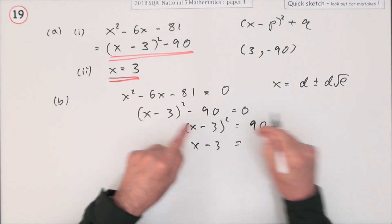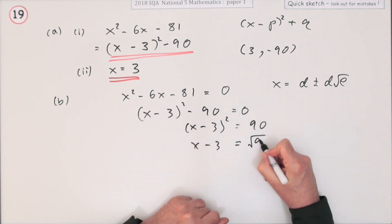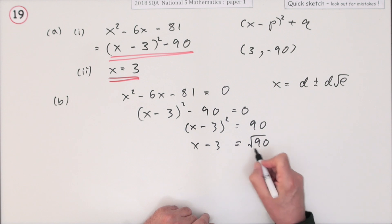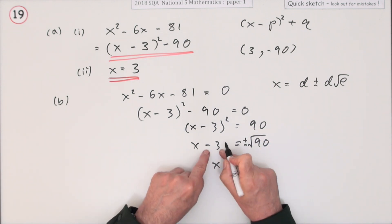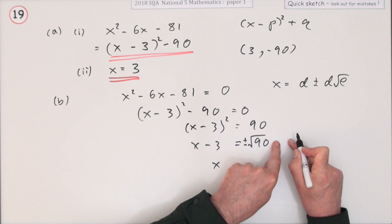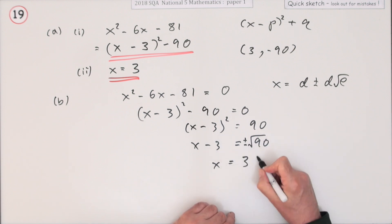So x minus 3 squared will be bring that across that's 90. Next get rid of the square. So square root of both sides. So that'll be the square root of 90. A square root can be positive or negative. And finally get rid of that. Subtract 3 as a plus 3. I'd rather write it at the front though. So it's 3 plus or minus the square root of 90.